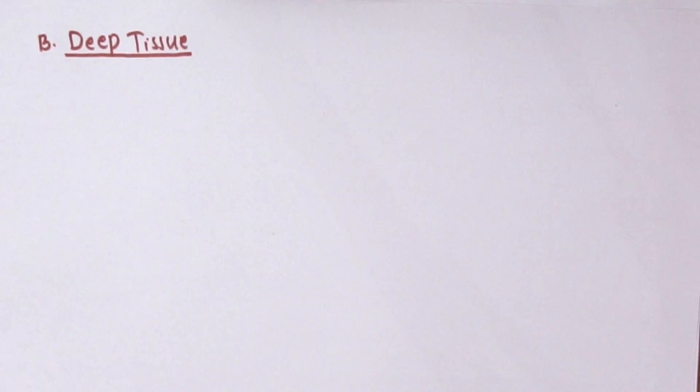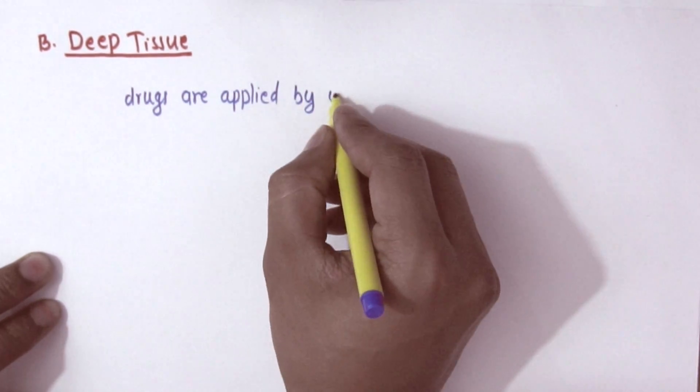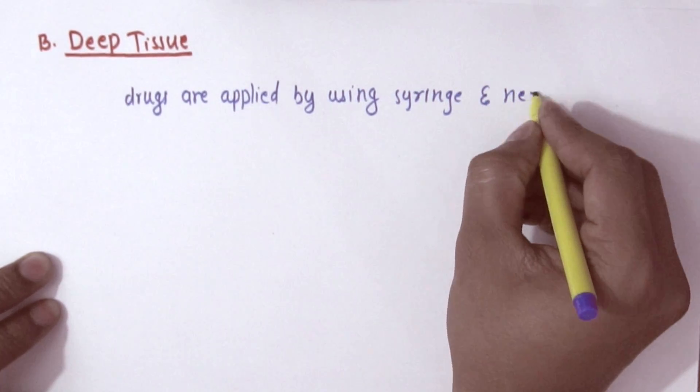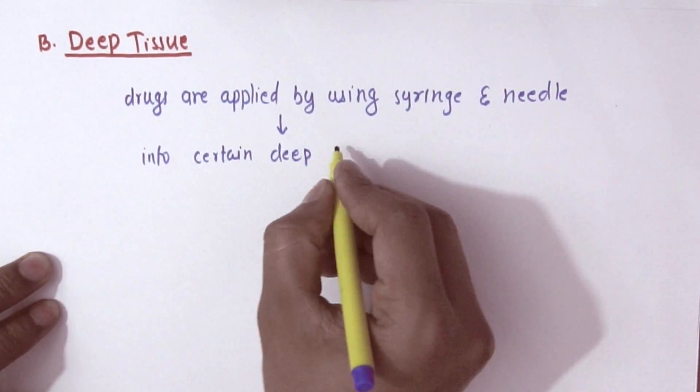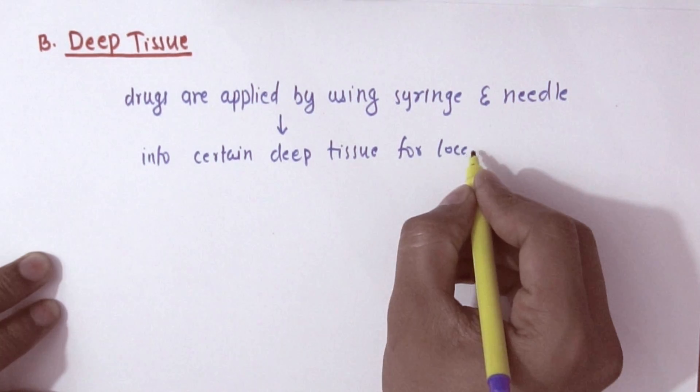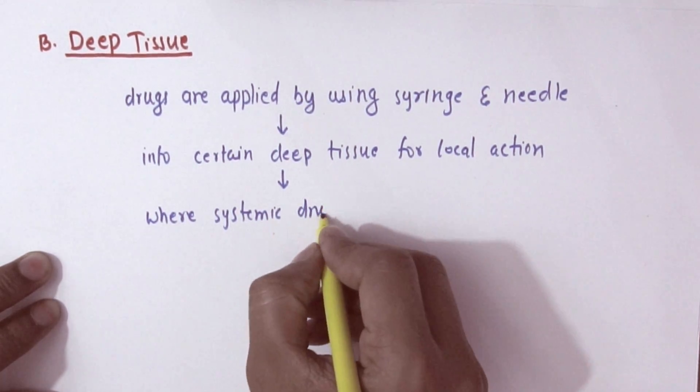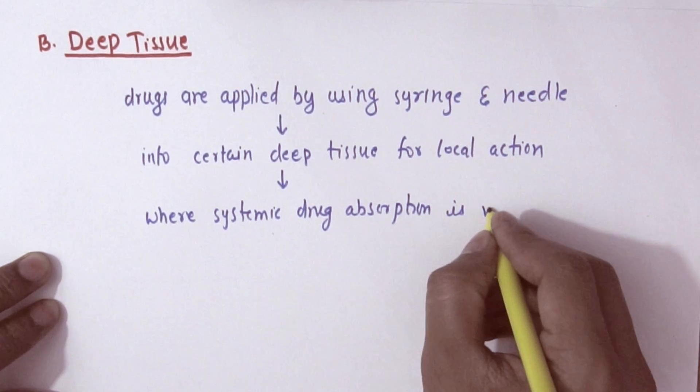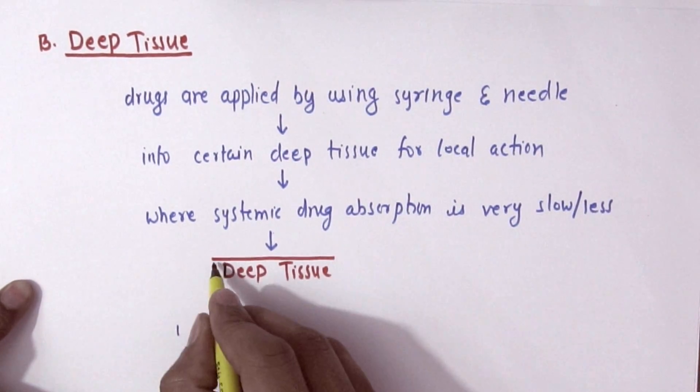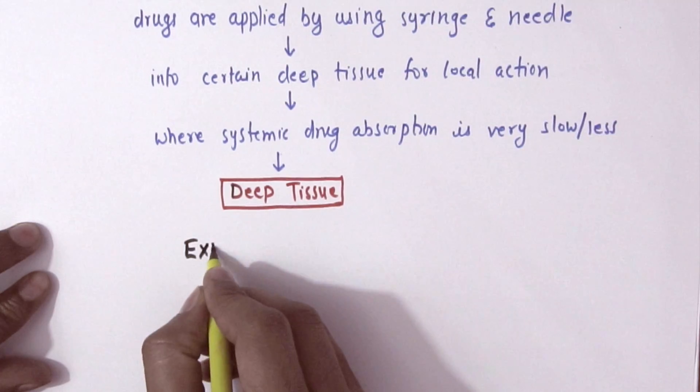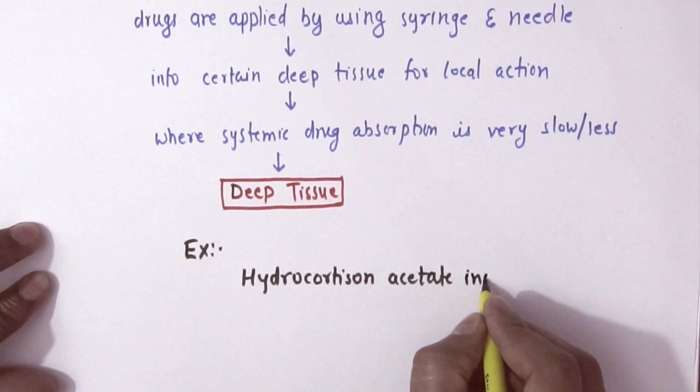The second one is deep tissue. Drugs are applied by using syringe and needles into certain deep tissue for local action where systemic drug absorption is very less or slow and drug will remain in that area to show the response. That is called deep tissue. For example, hydrocortisone acetate injection - this injection is given intra-articularly in joints, in the deep tissue exactly.